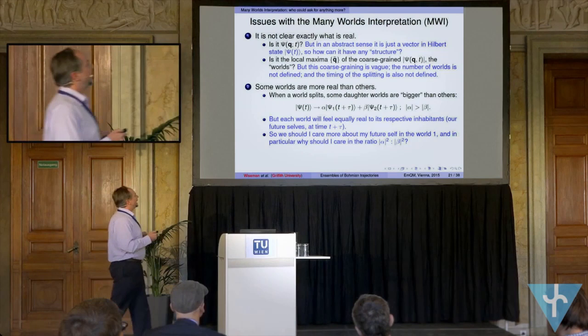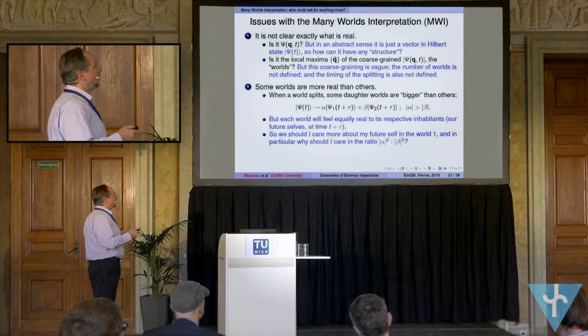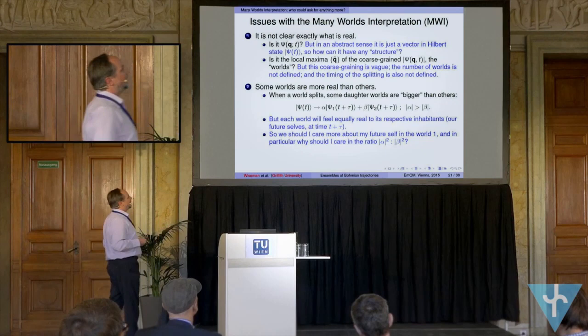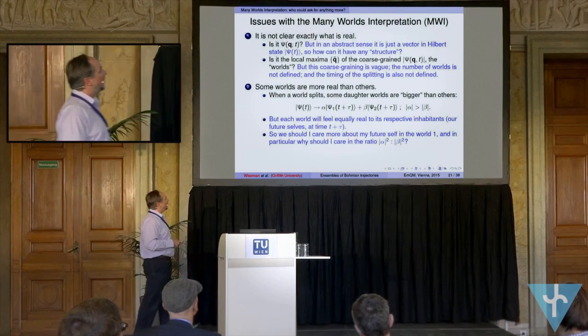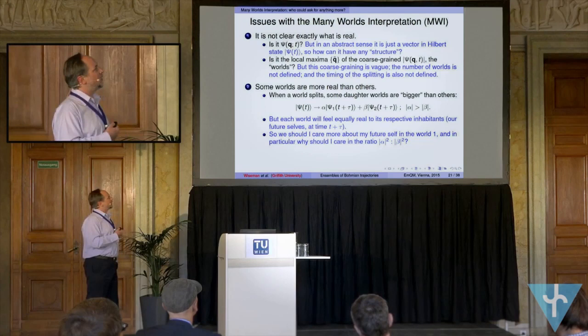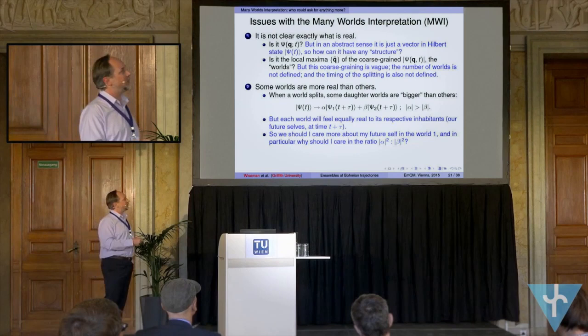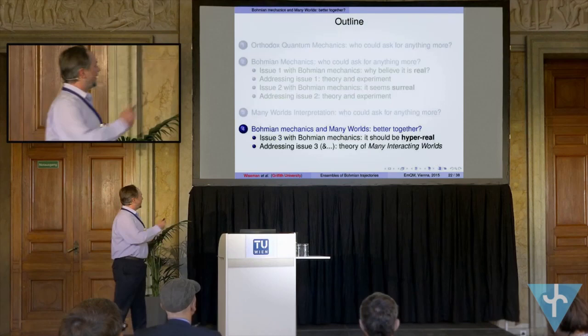Another problem that is always going to be faced is that some worlds are more real than others — that when you get this splitting, the heights of the maxima are not going to be equal. The point is that you have different coefficients in front of these two orthogonal states, and we could have that mod alpha is bigger than mod beta, which in some sense says that this world is bigger than that world. But for the people in those worlds, it's going to feel just as real. So why should I, before the split, care about which world I end up in at this particular ratio of mod alpha squared to mod beta squared?